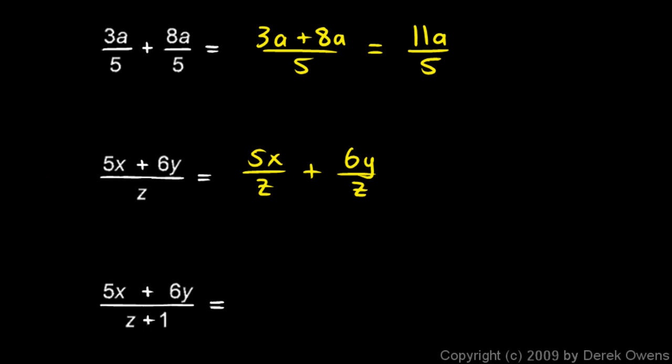So let's look at this one again. 5x plus 6y over z gave me 5x over z plus 6y over z. Now I'll do the same thing, but instead of z, we have z plus 1. So 5x plus 6y over z plus 1 is going to be 5x over z plus 1 plus 6y over z plus 1.